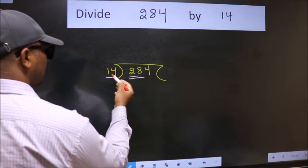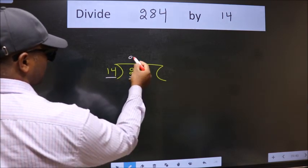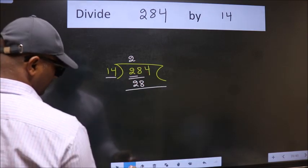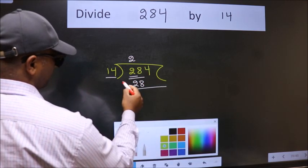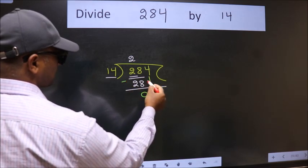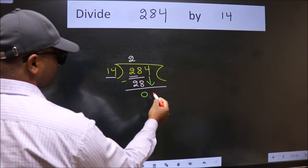When do we get 28 in 14 table? 14 twos, 28. Now we should subtract. We get 0. After this, bring down the beside number. So 4 down.